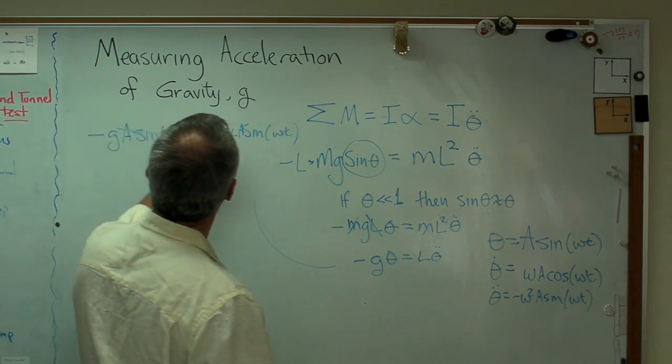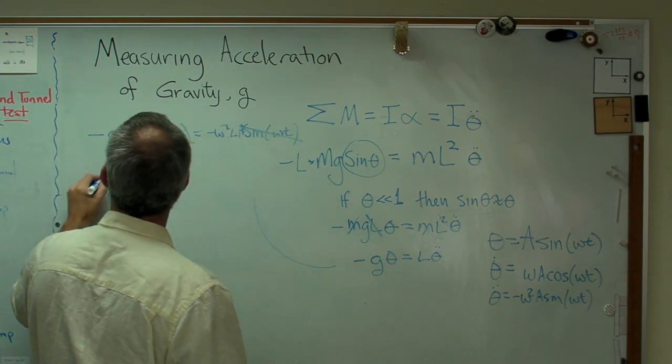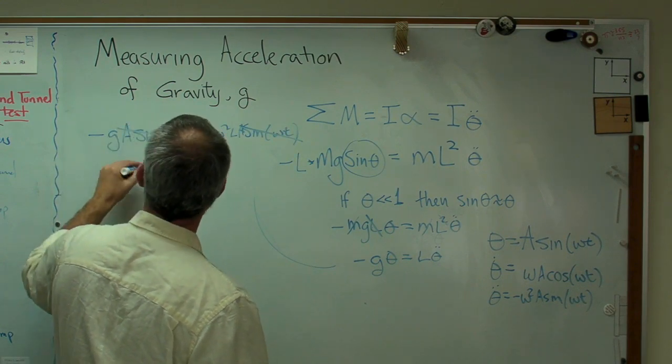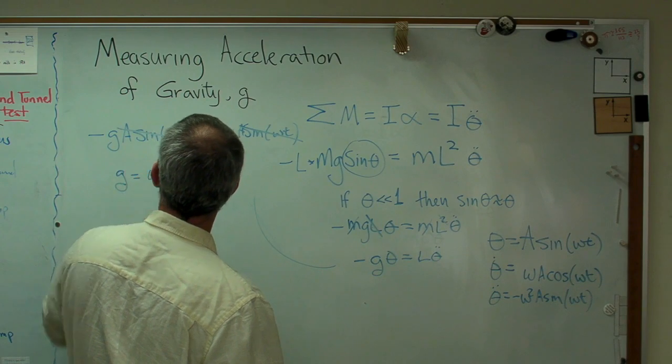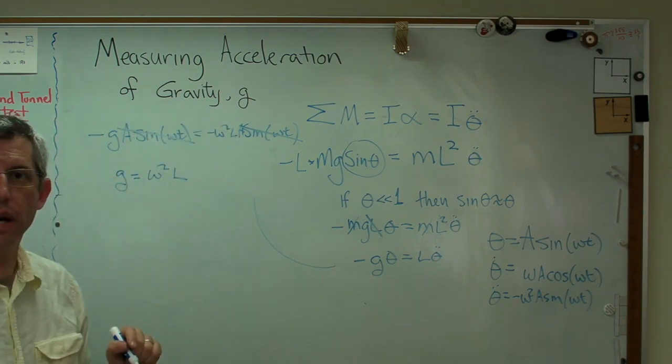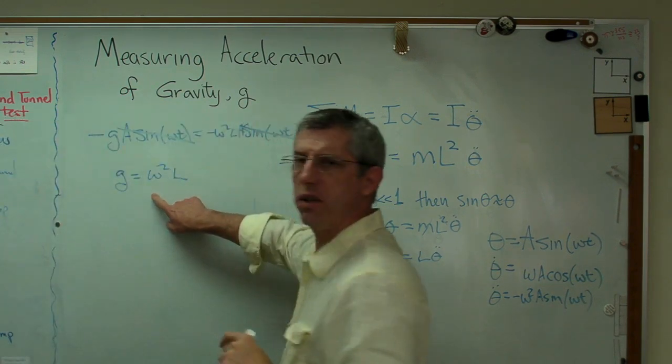I can cross that out. It's on both sides, so I have minus G equals omega squared L. Well, that's awfully easy. There's G. There's the thing I want to know. And there's an omega squared right there. That's a frequency. I ought to be able to measure that.